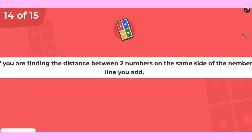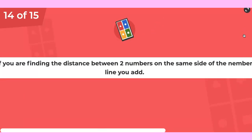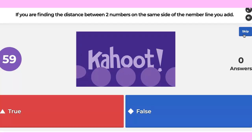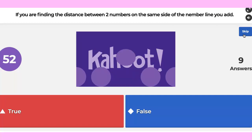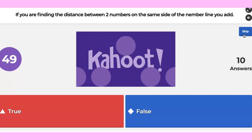Question 14: if you're finding the distance between two numbers on the same side of the number line, you add — true or false? Same side, same quadrant.